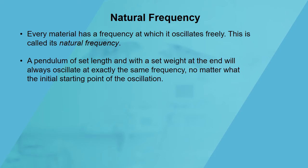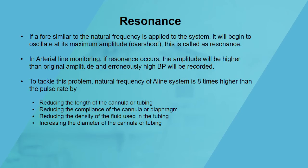Every material with oscillation has a frequency at which it oscillates freely — this is called natural frequency. For example, a pendulum of a set length and width will always oscillate at exactly the same frequency regardless of the initial starting point or energy applied. Whether maximum or minimum energy is applied, the frequency remains the same — for instance, a pendulum with 60 Hz energy will have 60 oscillations per minute regardless of the force applied. This is called natural frequency.